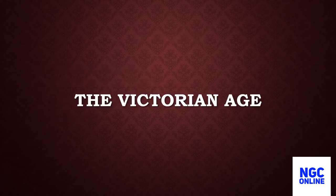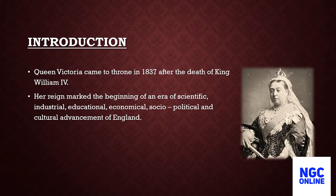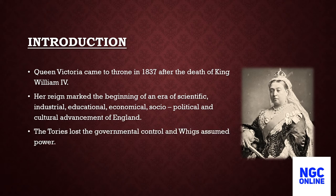Now we are going to discuss the Victorian Age. Queen Victoria came to the throne in 1837 after the death of King William IV. She was an excellent ruler and her reign marked the beginning of an era of scientific, industrial, educational, economical, socio-political and cultural advancement in England. The Tories lost governmental control and the Whigs assumed power. Whigs stoutly opposed monarchy and fought against the court's corruption, its foreign policy, and the persecution of the Protestants, while the Tories were staunch supporters of monarchy and the Church.